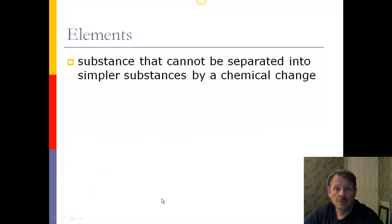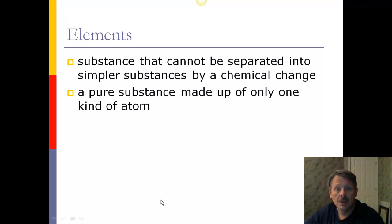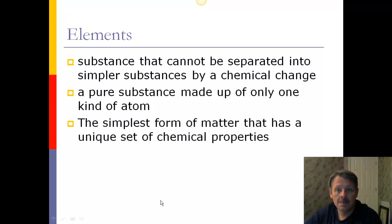Now, we do have some formal definitions of an element. For example, it's a substance that cannot be separated into simpler substances by chemical means. We can do that to compounds, but not to elements. A pure substance is an element if it is made up of only one kind of atom. If it's all carbon, then it's an element. And it's the simplest form of matter that has a unique set of chemical properties.